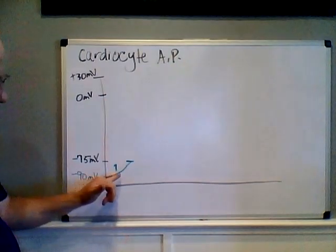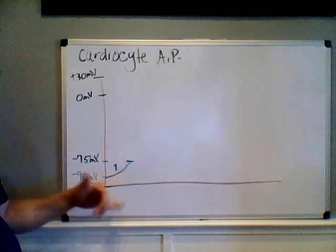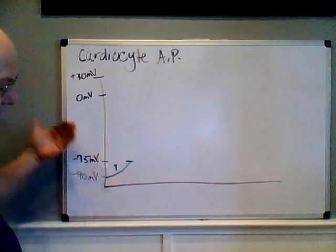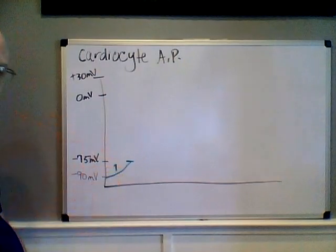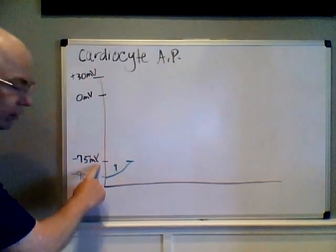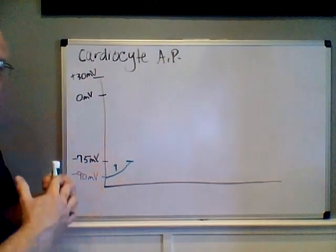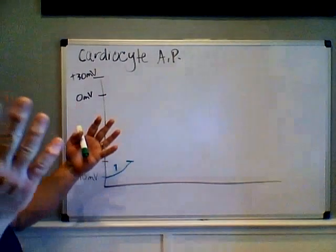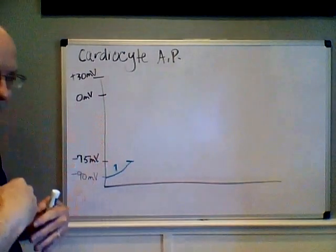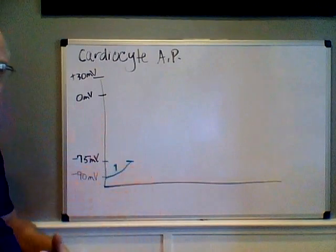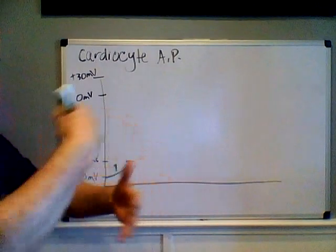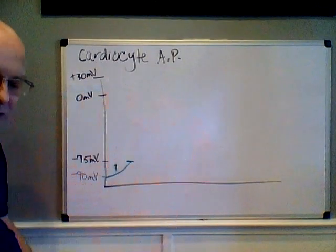In step one, it's all due to leaky sodium channels allowing sodium ions to leak into the cell, making it become more positively charged. Once we hit threshold, the voltage-gated channels begin opening, and because so much sodium is rushing in, they all start opening in rapid succession.